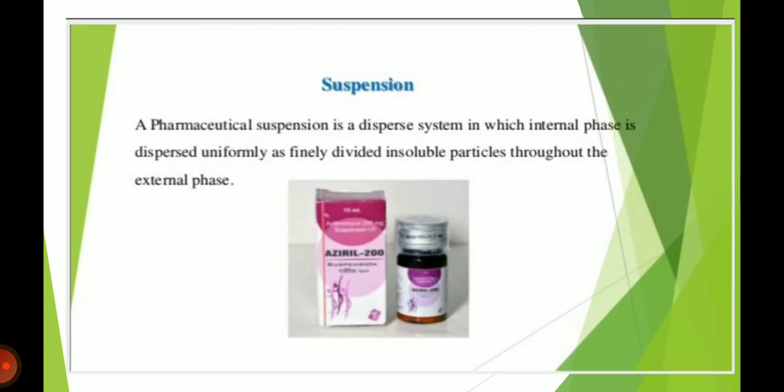So what is suspension? Suspension is a dispersed system in which the internal phase is dispersed uniformly as finely divided insoluble particles throughout the external phase. In suspension we have two phases present: internal phase and external phase. The internal phase consists of finely divided insoluble particles which are dispersed in the liquid phase.